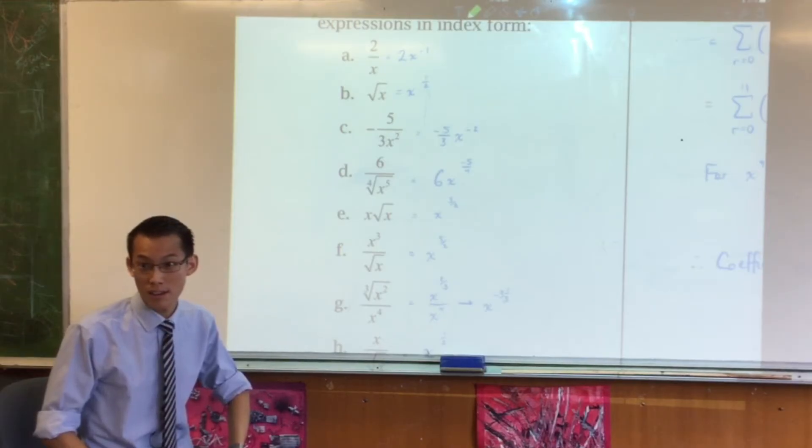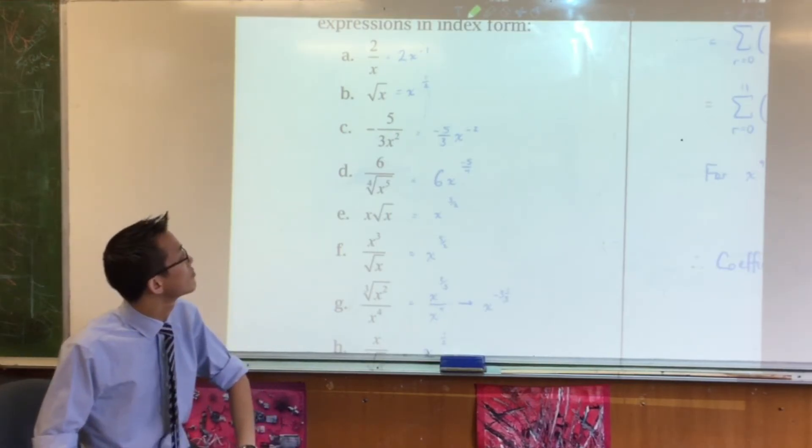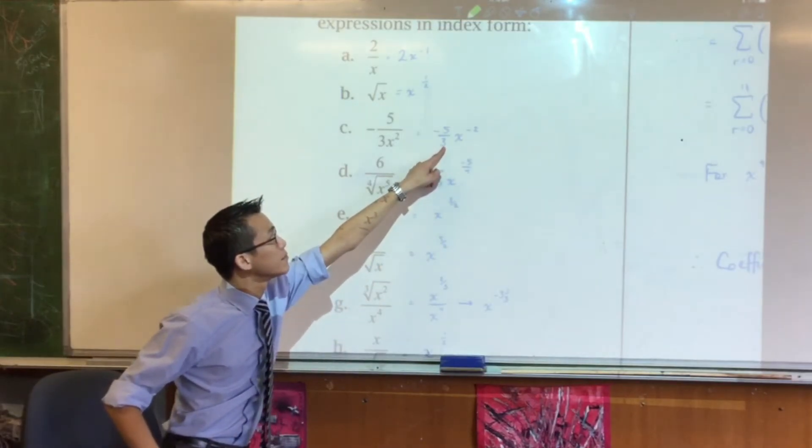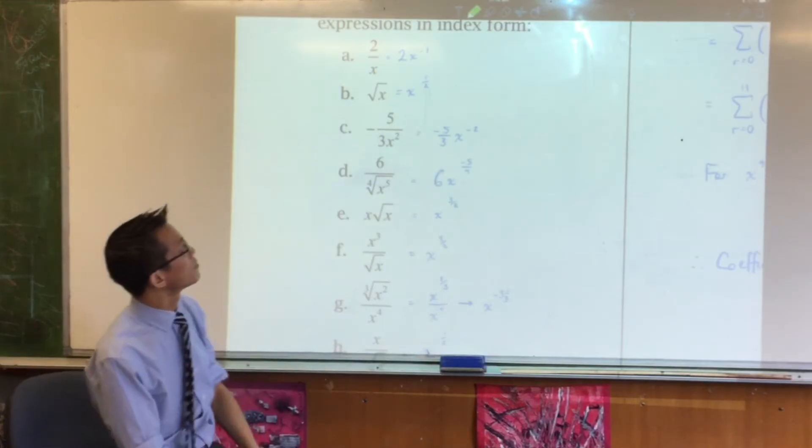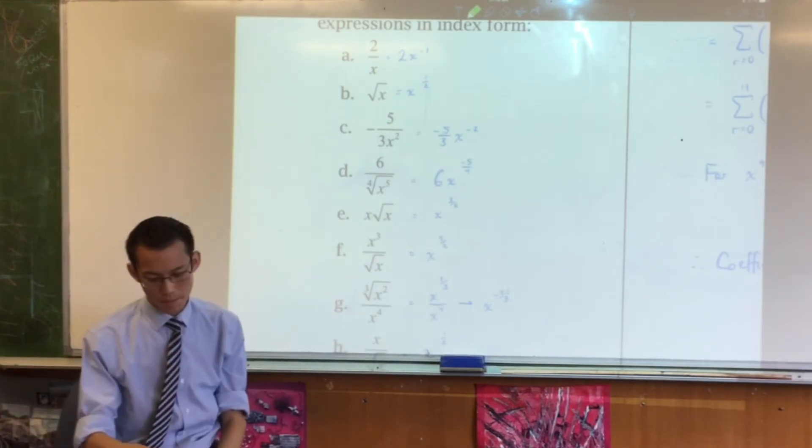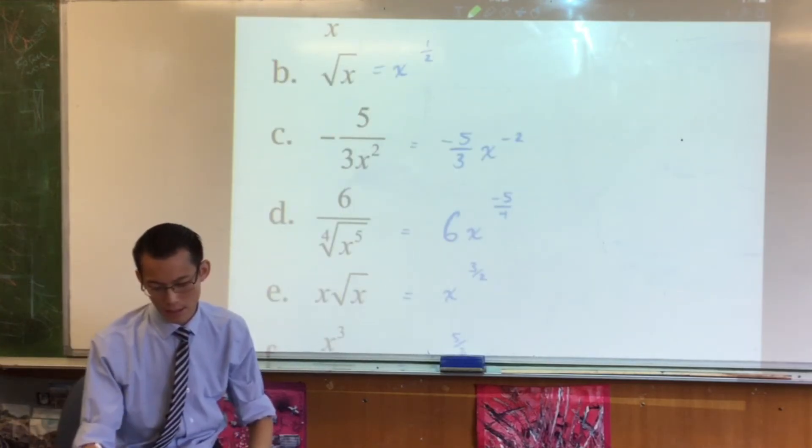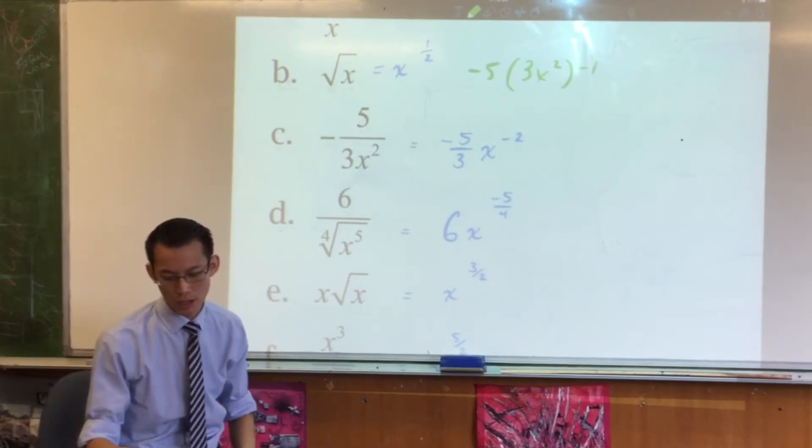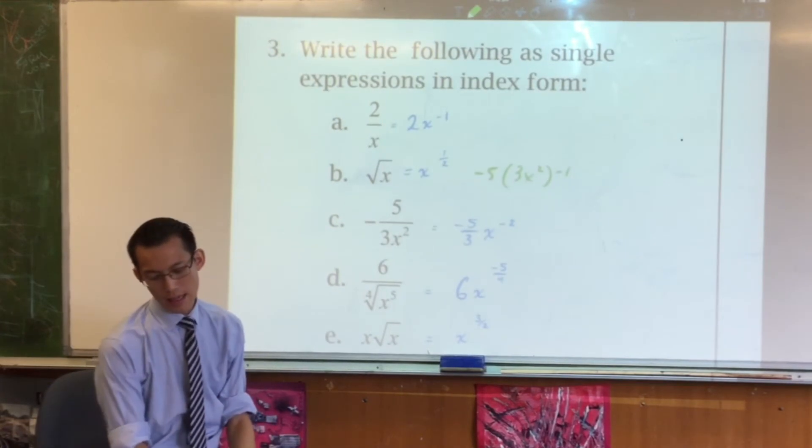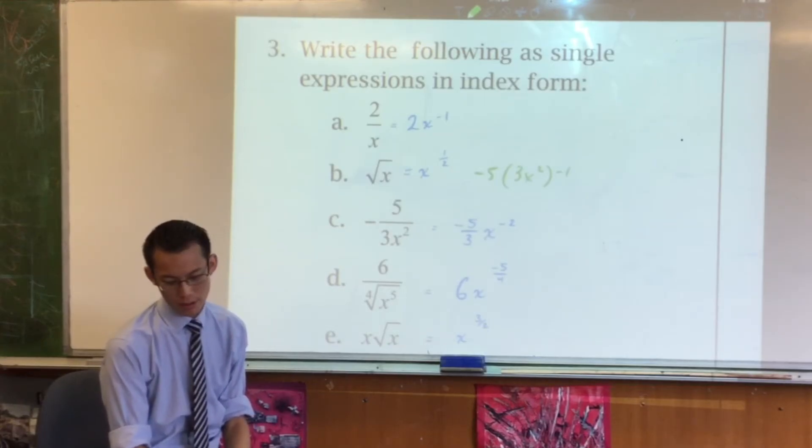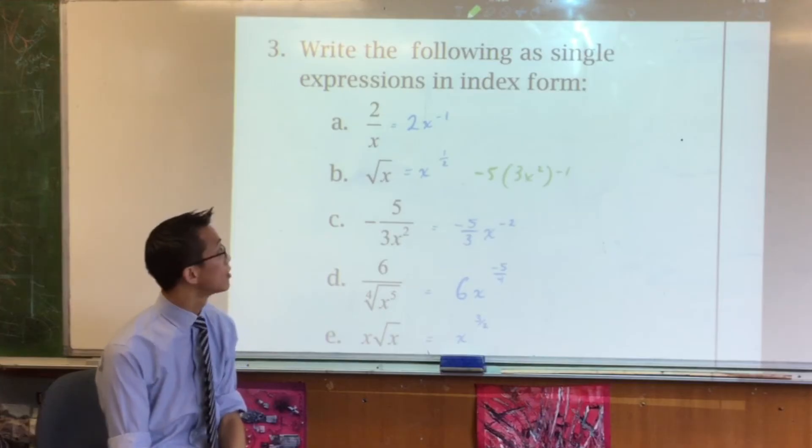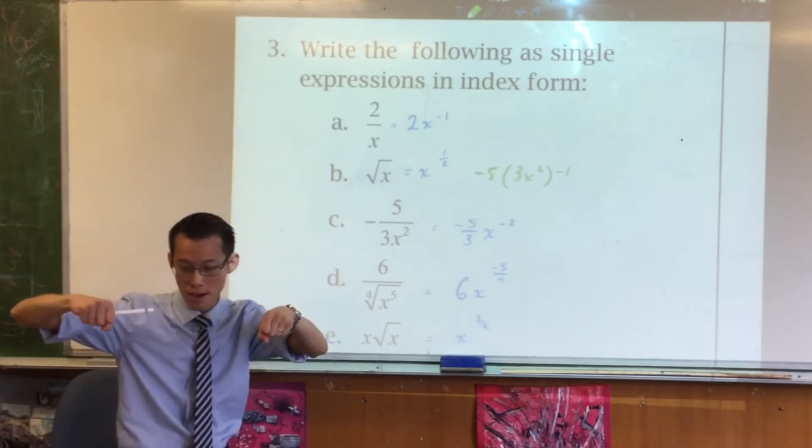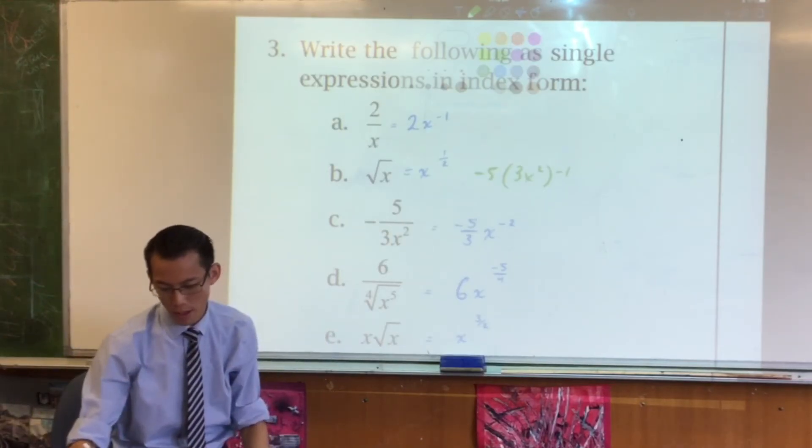Yeah, okay. Some of us put, like, instead of five thirds of x—for example, see that one there? We put minus five times, and then brackets, three squared, three x squared, all to the minus one. Oh I see. Sorry, you're saying this minus five outside of three x squared to the negative one, is that what you're saying? Yeah, yeah. Sure. What I would say is that is not wrong, but it also isn't what the question is asking.